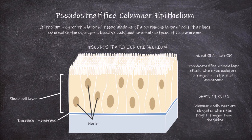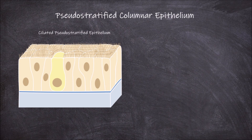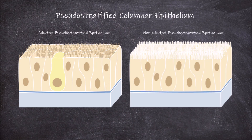There are two types of pseudostratified columnar epithelium: ciliated and non-ciliated. Ciliated pseudostratified columnar epithelium consists of a single layer of irregularly sized columnar cells that have cilia on the apical surface of the cells. Interspersed between the ciliated cells are the occasional modified columnar cells called goblet cells. These cells lack any cilia on the apical surface of the cell.